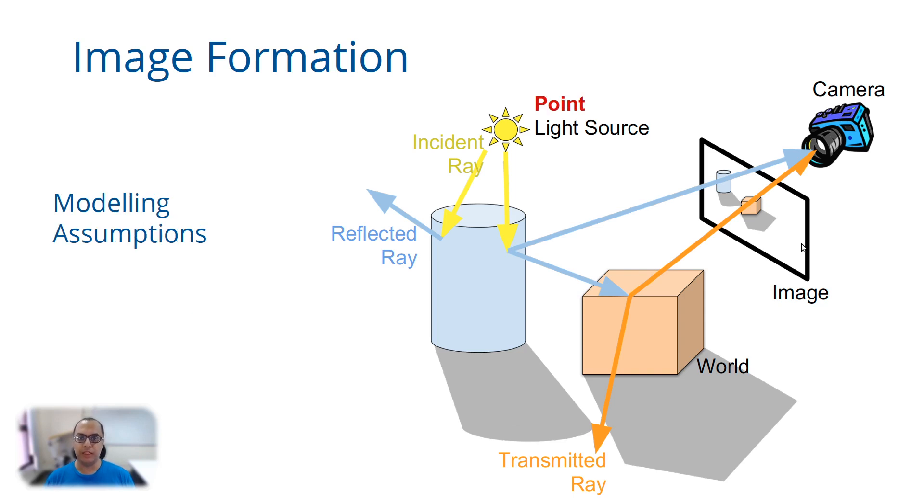This process of image formation in the real world is very complex. The physics of image formation can get extremely computationally intensive, so we make some modeling assumptions. One of the first modeling assumptions we make, we will relax these for more complicated rendering, but we will not do those things in this course. For the purpose of this course, we have the following modeling assumptions.